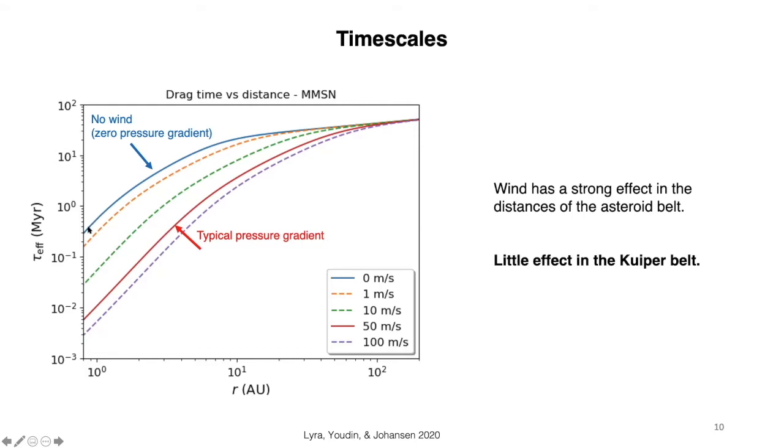As you see here, it starts to decrease, indeed, at the distances of the asteroid belt. Then you get drag times of the order of 1 million years. But at the Kuiper belt, the drag times remain beyond 10 million years.